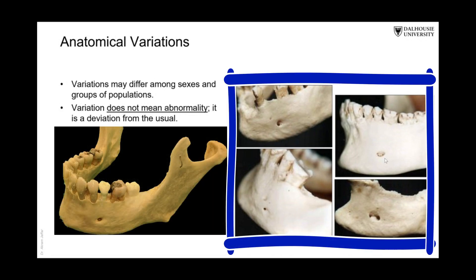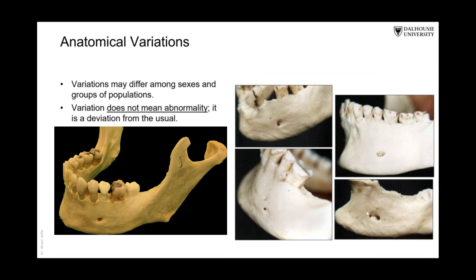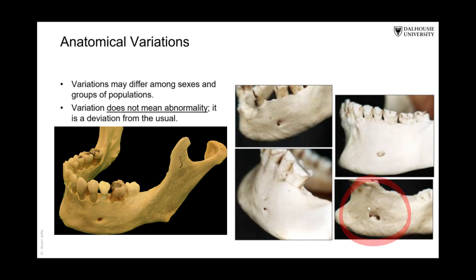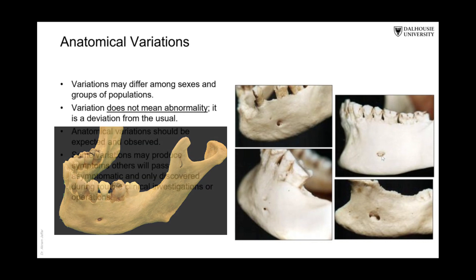You can see here, for example, in these four pictures of the mental foramen, how it varies from one person to another. It's the same foramen, but here it is double; here the nerve appears from this foramen and then re-enters the bone; and here it is a very big foramen. This is not an abnormality — this is an anatomical variation.